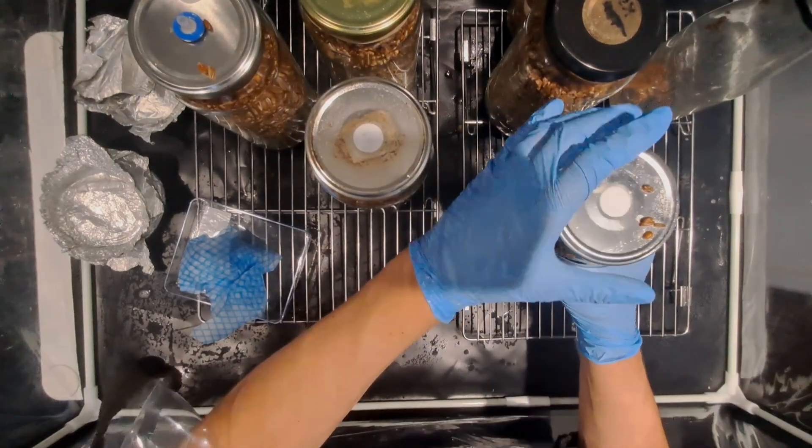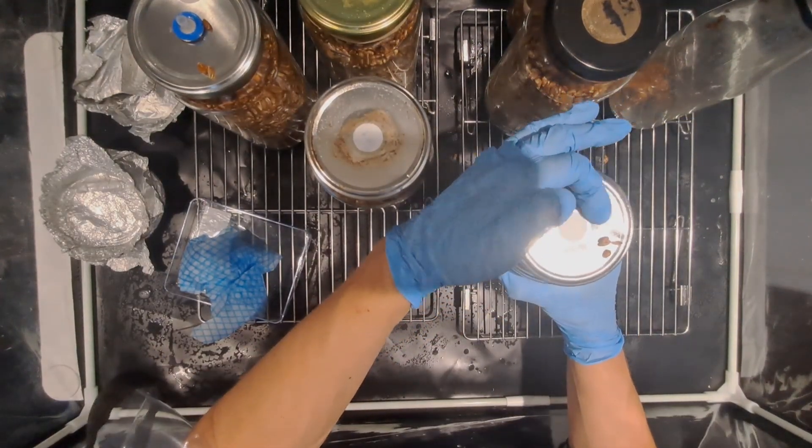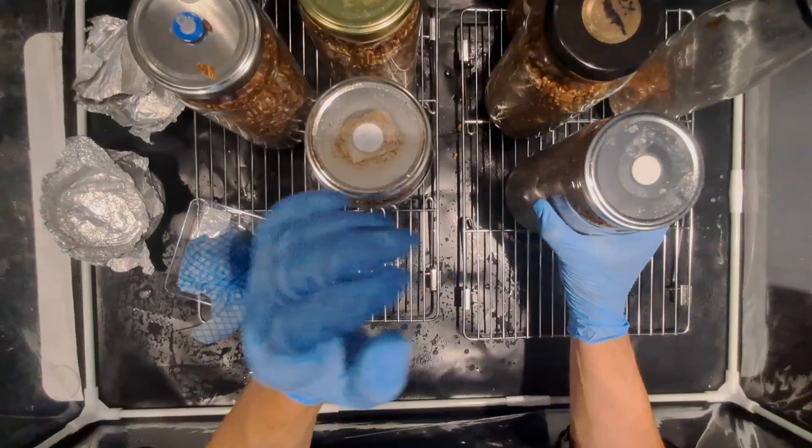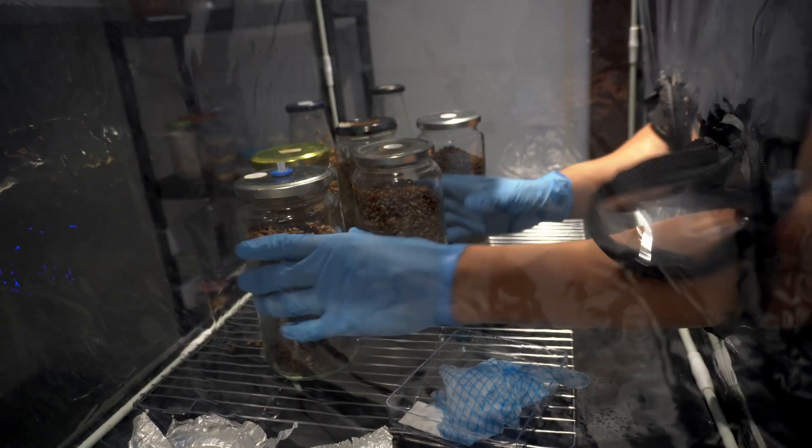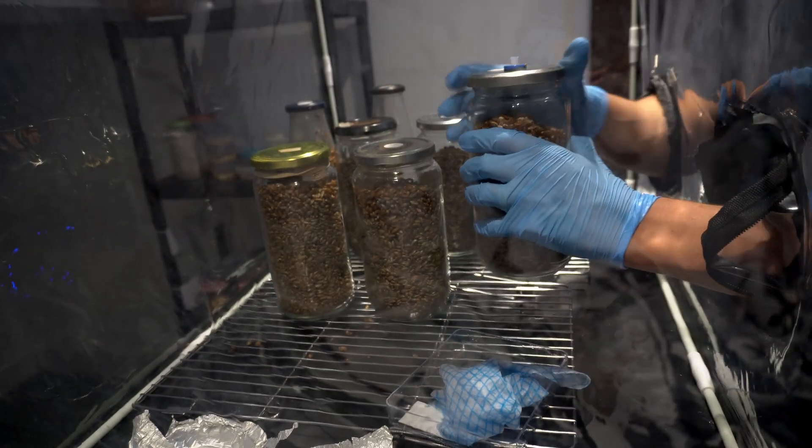Finally remove any stray grains from the top of the jars, tighten your jars up and you are finished. Leave them to incubate and you'll have plenty of spawn jars in about 7 to 10 days.